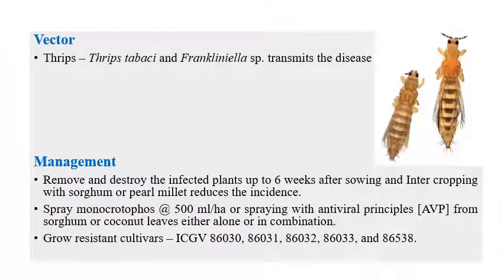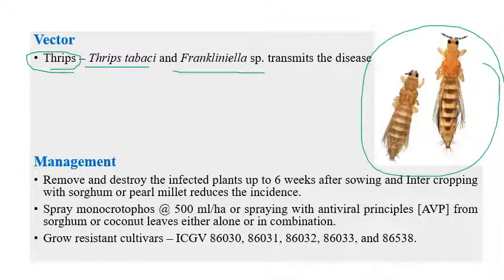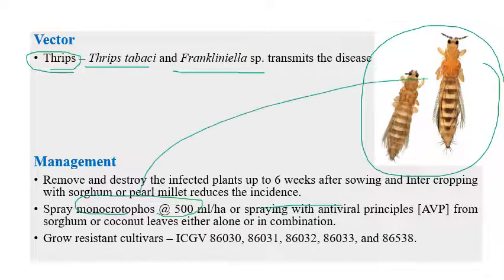Bud necrosis is transmitted by the thrips vector, specifically Thrips tabaci or Frankliniella species. For management, removal and destruction of infected plants up to six weeks after sowing and intercropping with sorghum or pearl millet can reduce incidence. Spraying monocrotophos at 500 ml per hectare, an insecticide to control the insect vector, is recommended.